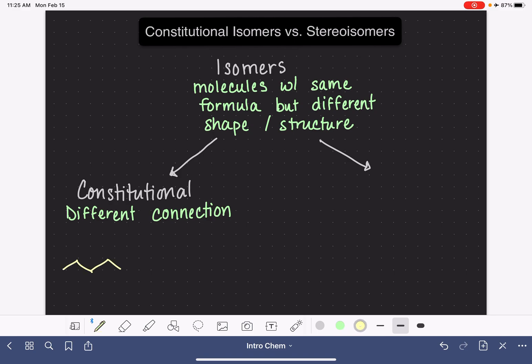So one example would be five carbons in a straight chain versus four carbons in a straight chain with one branch. Both of these molecules are C5H12, but the atoms in the molecule are connected in a different order. Five carbons straight in a row versus four carbons in a row with a branch.